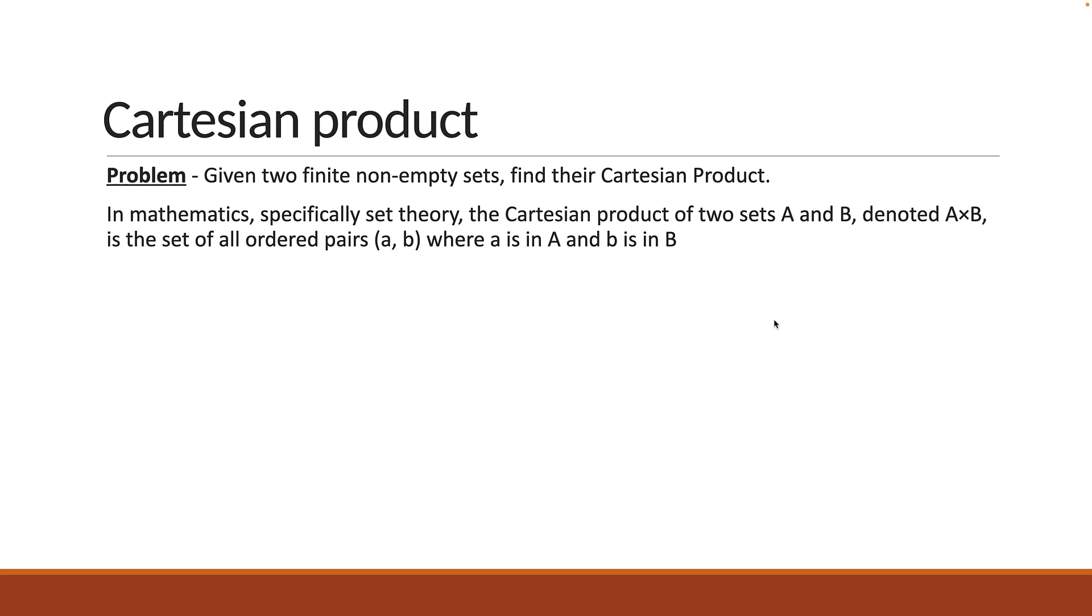We would be representing a set as an array in JavaScript. For example, if set A contains 1 and 2 as elements and set B contains 3 and 4 as elements, their Cartesian product is an array that contains smaller arrays with elements [1, 3], [1, 4], [2, 3], and [2, 4].